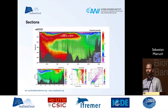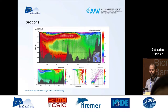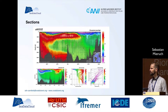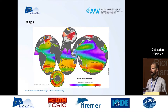What can we do with ODV? For example, we can create these fantastic section plots. Here you see a section going through the whole Atlantic Ocean from the North Pole to the South Pole, with phosphate interpolated from the bottom of the ocean to the surface. We can also create nice maps — for example, oxygen measurements in 500 meter steps.